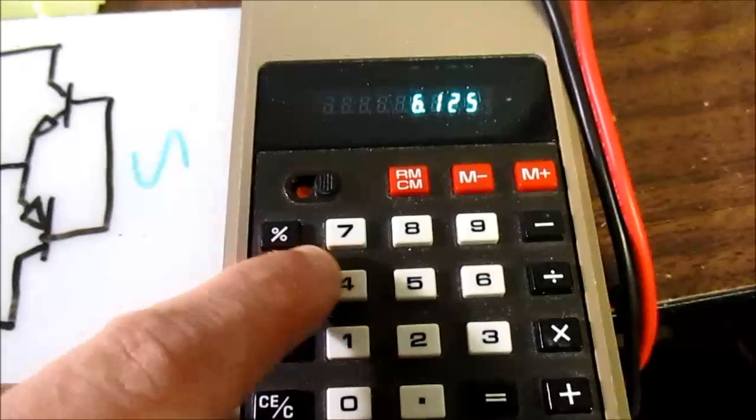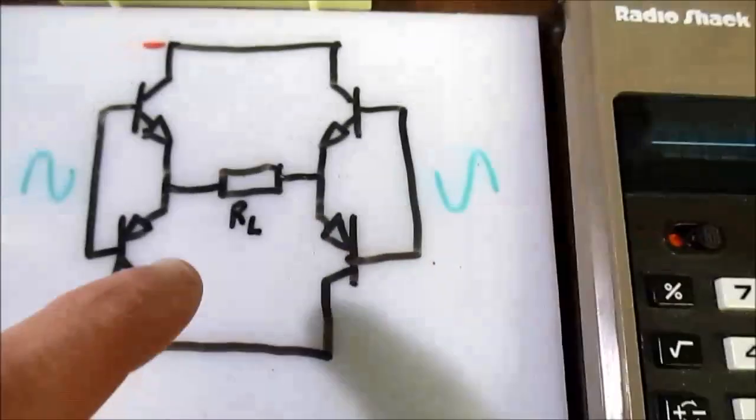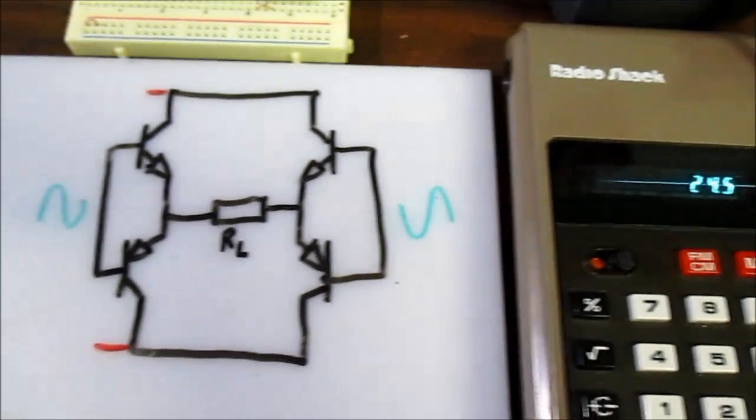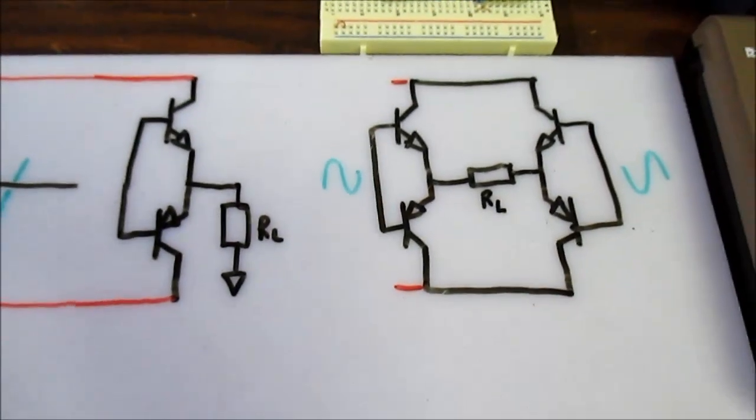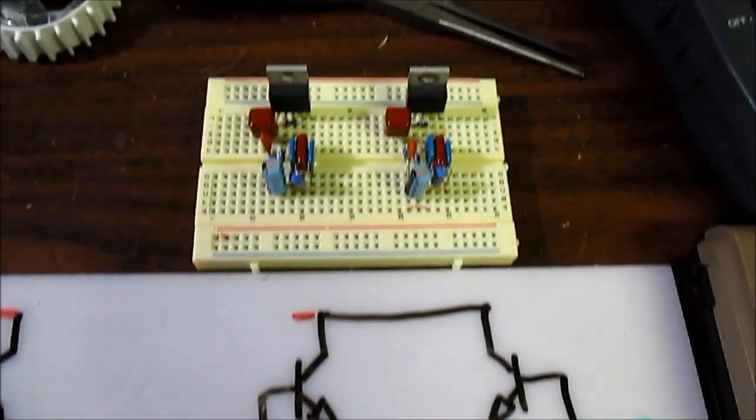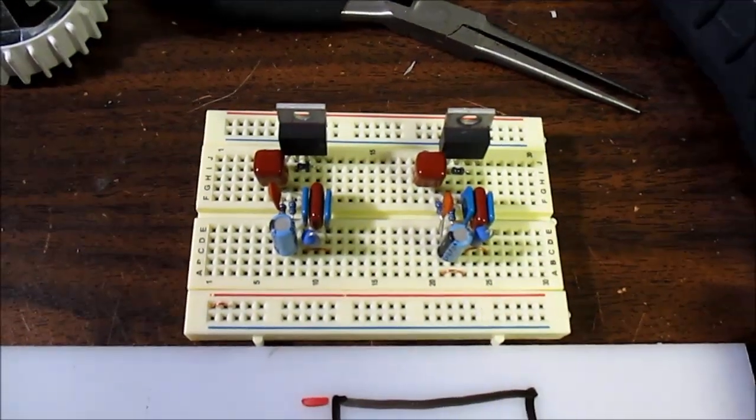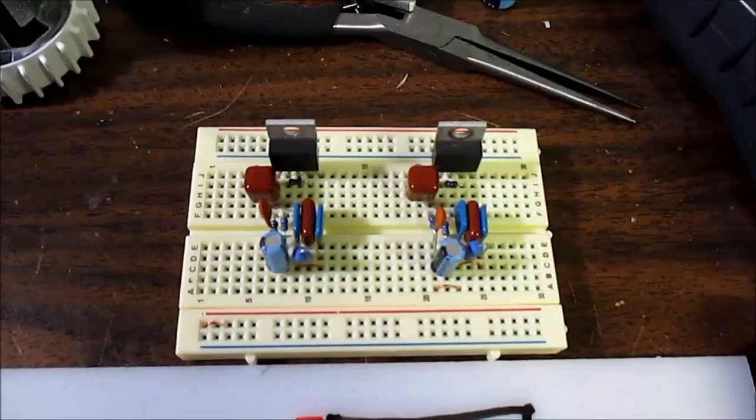And in bridge configuration with an 8 ohm speaker, it's quadruple that at 24.5 watts. So there you go. That's bridging. Let's actually hook up a bridge amplifier and measure the output.